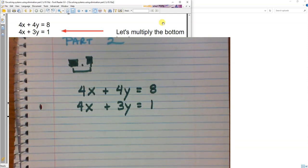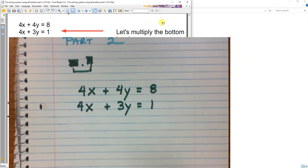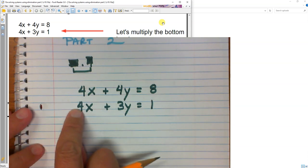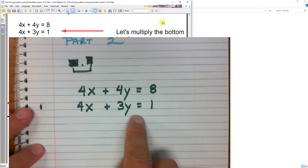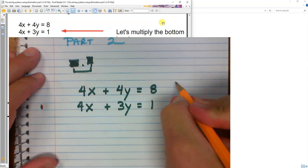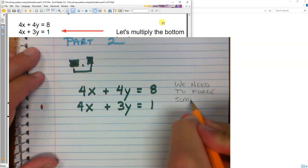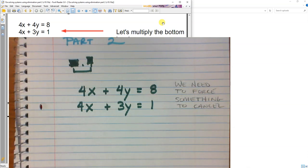And when we look at this we realize nothing will cancel. But man, these guys are so close to canceling. This is a 4 and this is a 4. If only this was a negative, life would be so fantastic. We have to somehow get something to cancel.